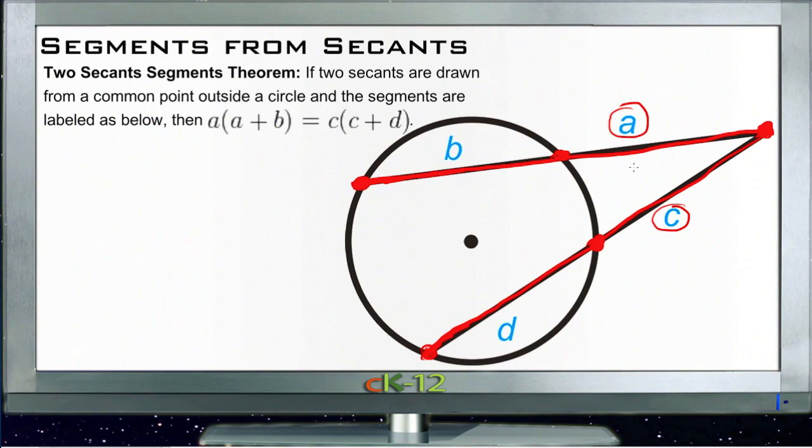So if we were to have a couple of numerical values for these, we can actually substitute in the values that we have and solve for a missing piece. In other words, if we said that A, this segment here, was four units long, and B was five units long, then if we know that C is three units long, we could solve for D.